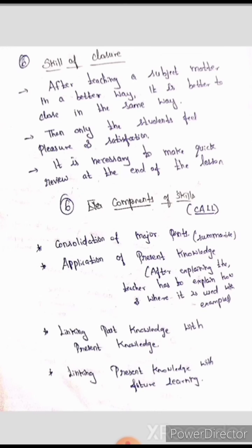The first component is consolidation of major points — summarizing. You summarize what was learned, identifying key words and important points. The next is application of present knowledge: after explaining, the teacher has to show how and where the knowledge is used with real-time examples. Then linking past knowledge with present knowledge, and linking present knowledge to future knowledge — concluding the lesson.